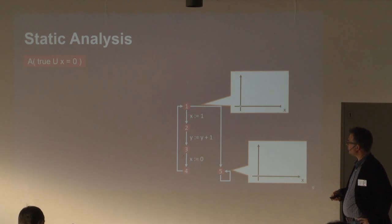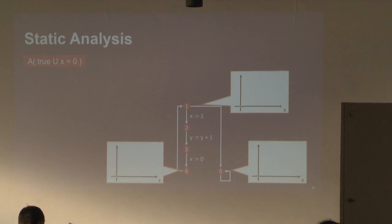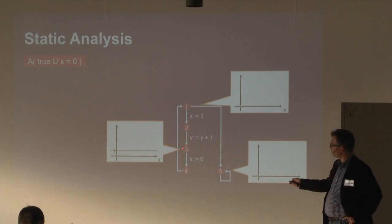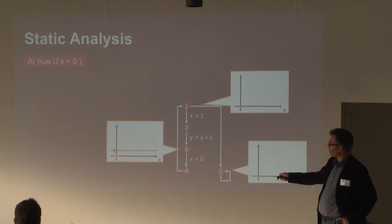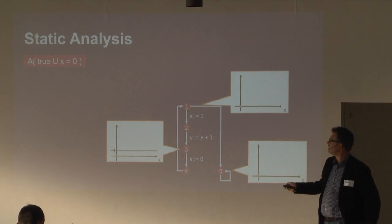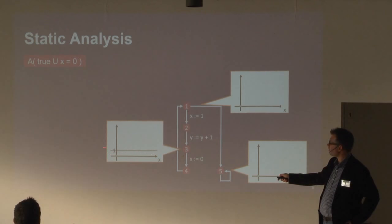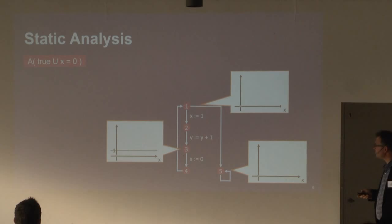We can't continue the backward analysis without a result for the other branch, so we start from another program point. There too, if x is zero the function is defined. Moving one step back: if x happens to be zero in that state, the formula holds in zero steps because x is already zero. In all other cases the formula holds in one step — we assign zero to x and then it definitely holds. So we get a function that is defined everywhere: zero at one point, and one everywhere else.